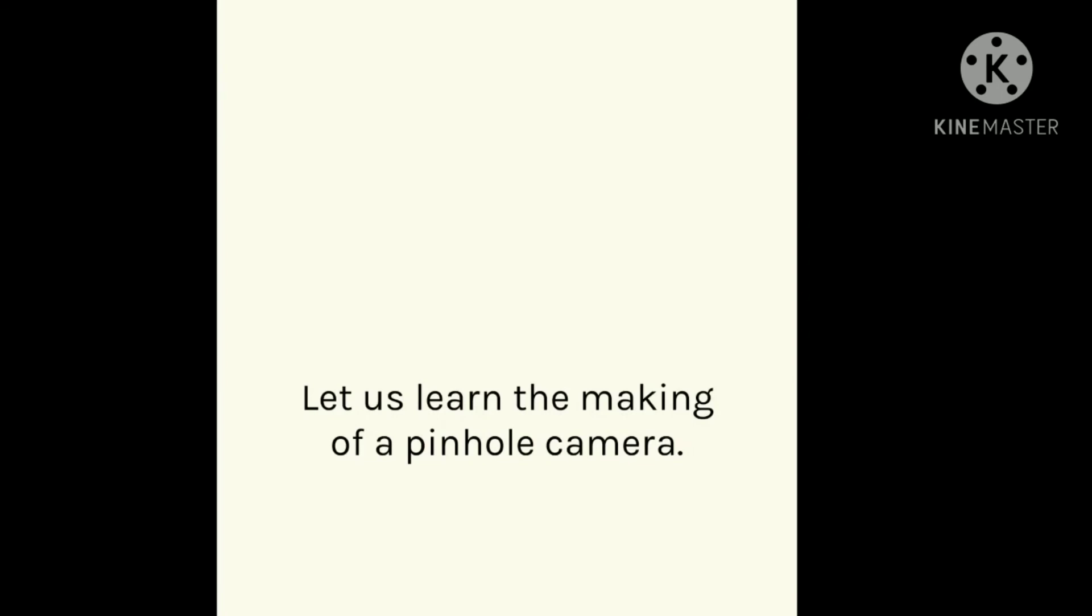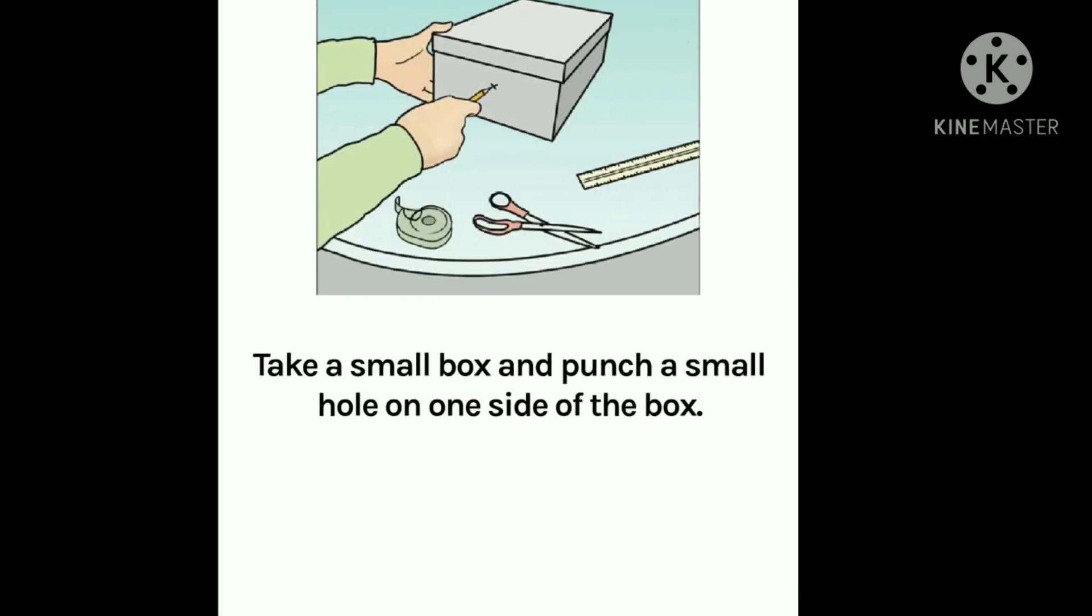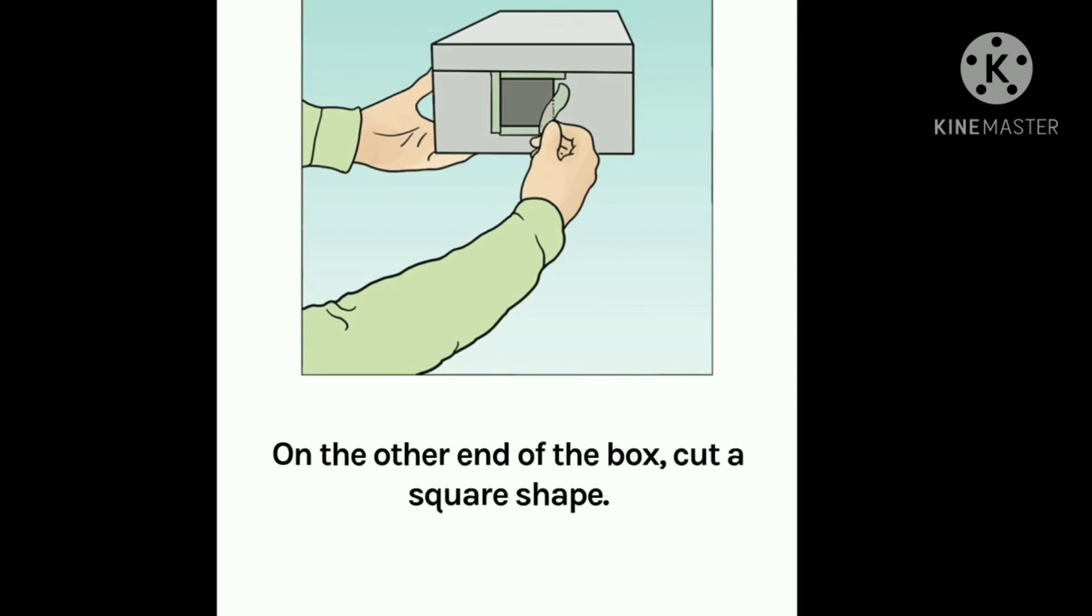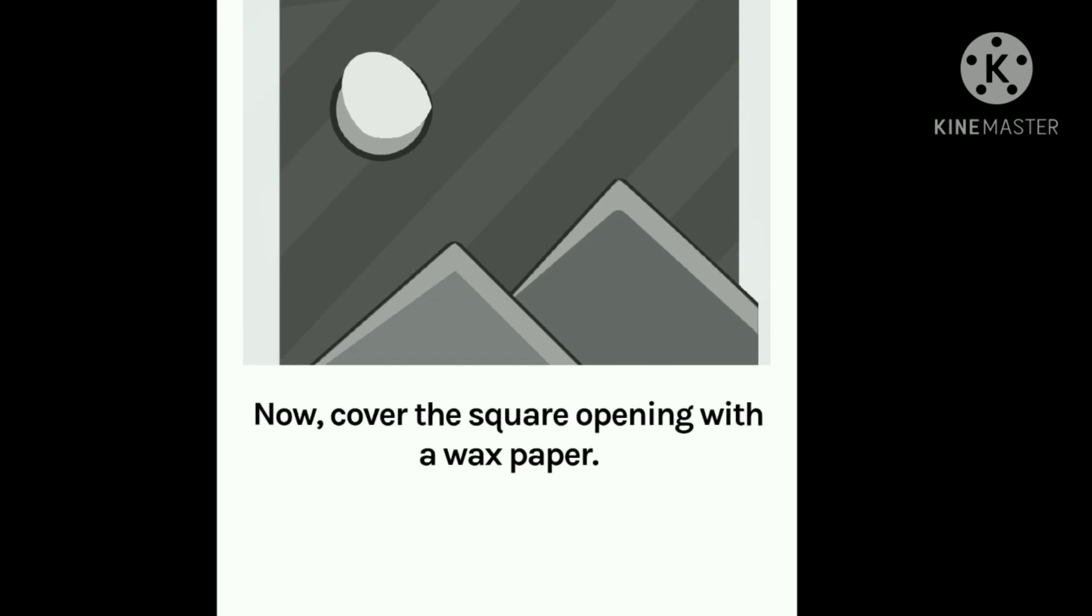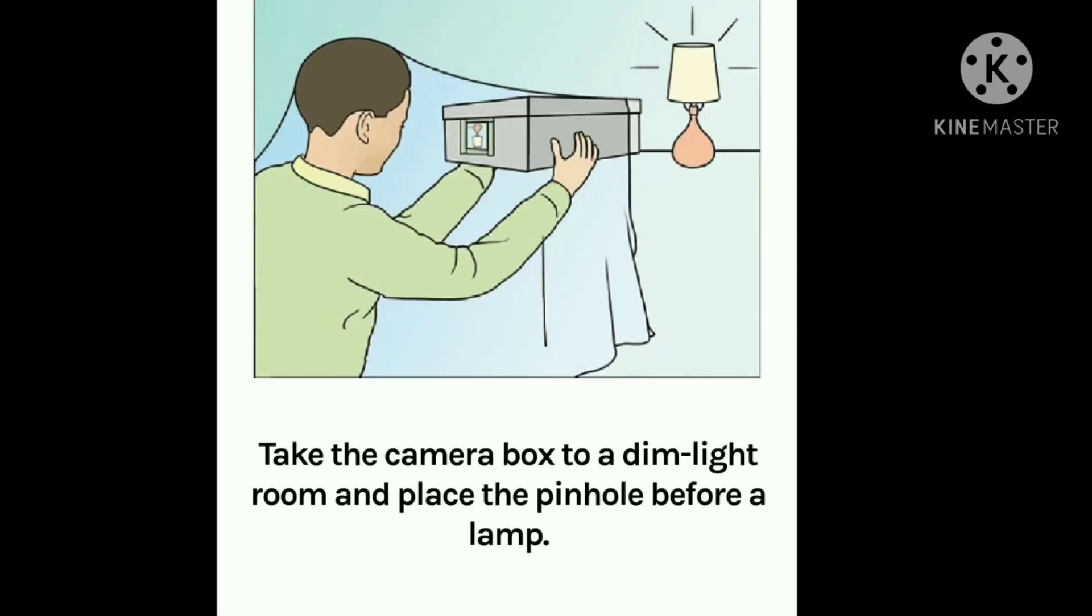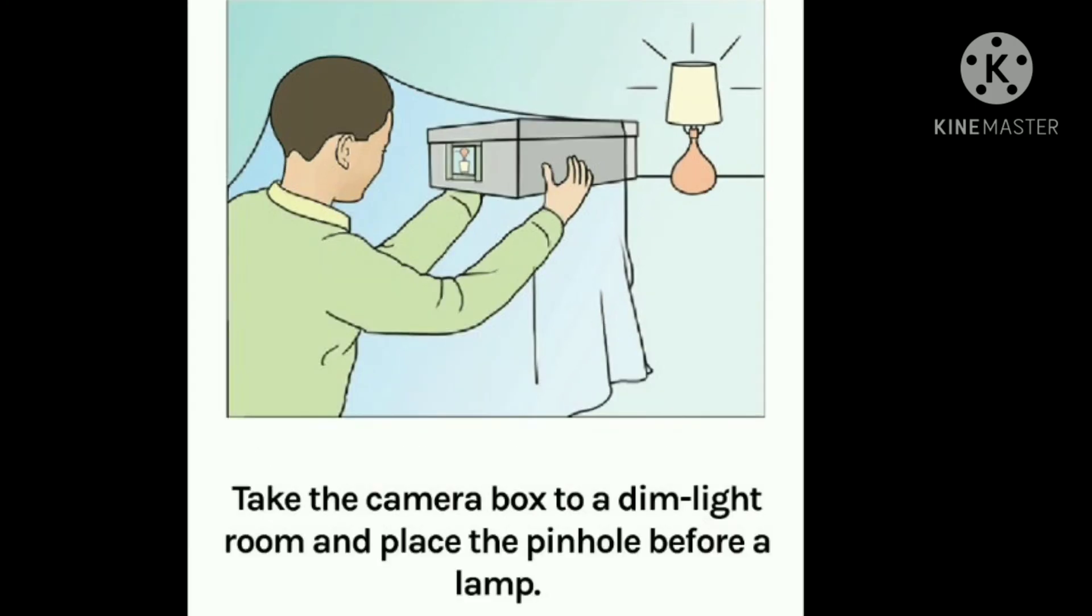So let's learn the making of a pinhole camera. Take a small box and punch a small hole on one side of the box. On the other end of the box, cut a square shape. Now, cover the square opening with wax paper. Take the camera box to a dimly lit room and place the pinhole before a lamp.